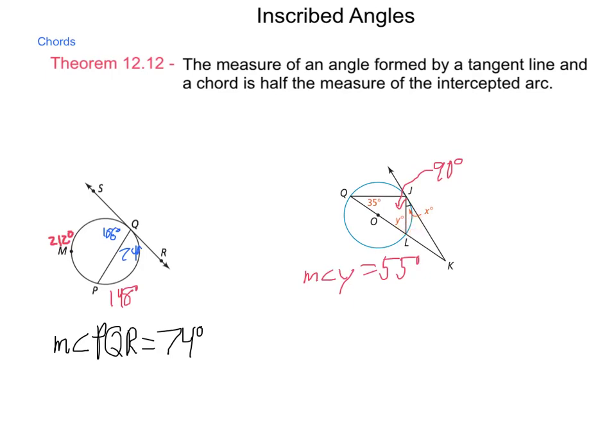So, the measure of angle X is also 35 degrees right along with the original angle we were given.